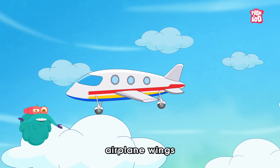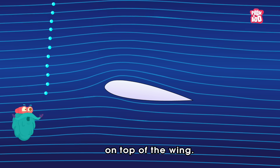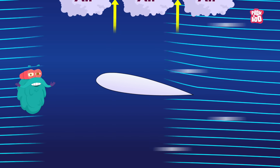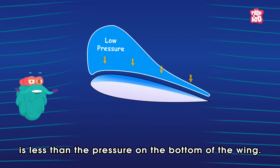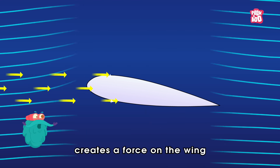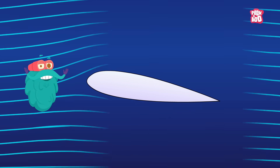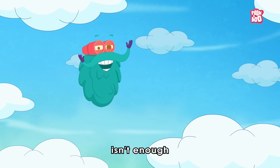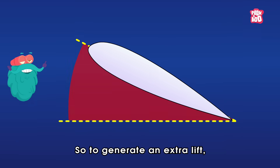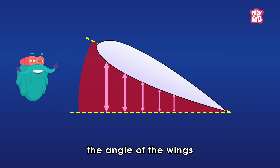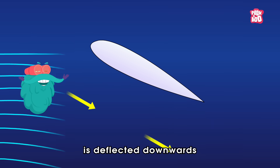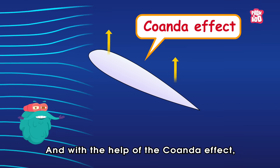Airplane wings are shaped to make air move faster on top of the wing. When air moves faster, the pressure of the air decreases. So the pressure on top of the wing is less than the pressure on the bottom of the wing. The difference in pressure creates a force on the wing that lifts the wing up into the air. But this level of force isn't enough to elevate the airplane high above the surface. So to generate extra lift, the angle of the wings is tilted in a way that the air under it is deflected downwards to the surface.